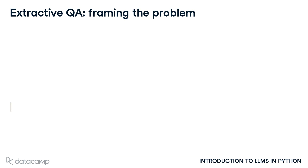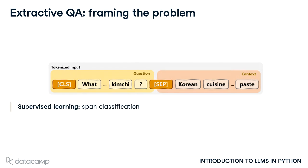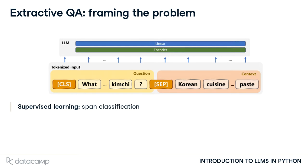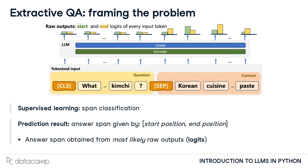Extractive QA is a supervised learning problem, namely classification. The pre-processed question and context are jointly passed as input to the LLM, which returns raw outputs or logits. For each input token in the sequence, two output logits are produced, indicating the likelihood of the token being the start or end position of the answer span. Post-processing these logits determines the predicted answer span — a segment of the input sequence defined by start and end token positions with the highest probability of containing the answer.